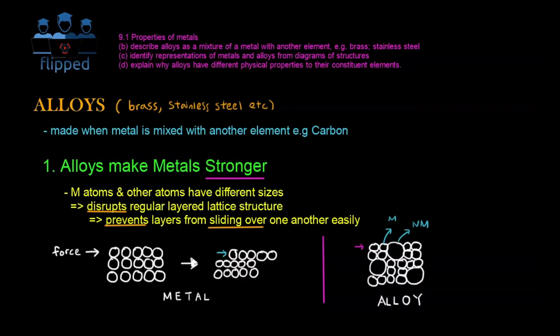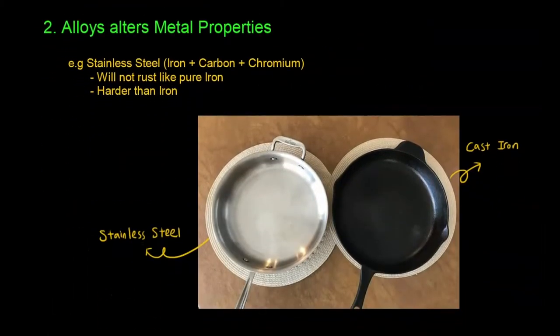Next, we'll talk about its properties that are being altered. In the case of stainless steel, which is made up of iron plus carbon plus chromium, it will not rust like pure iron does, and it's harder than iron. Here what we have is a cooking appliance—these are just pans.